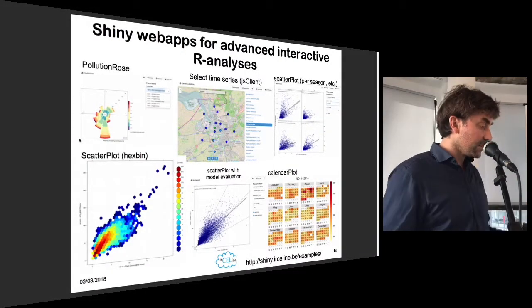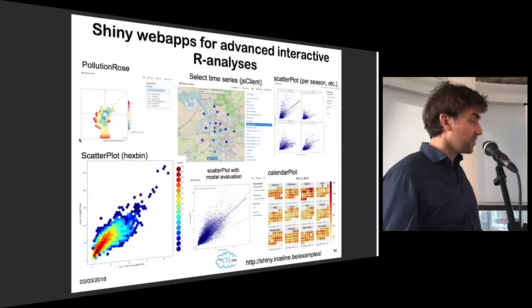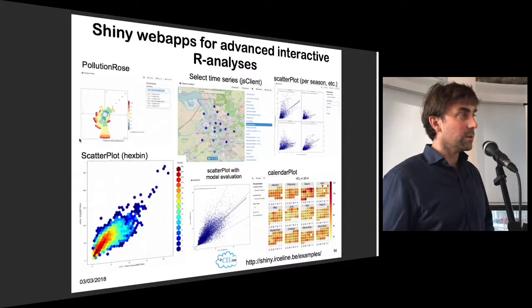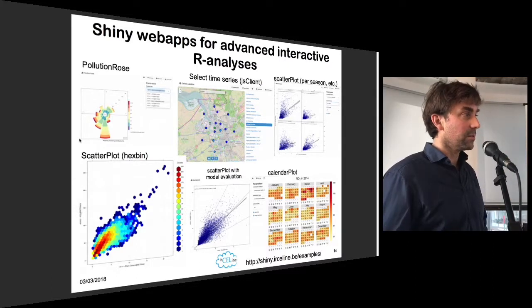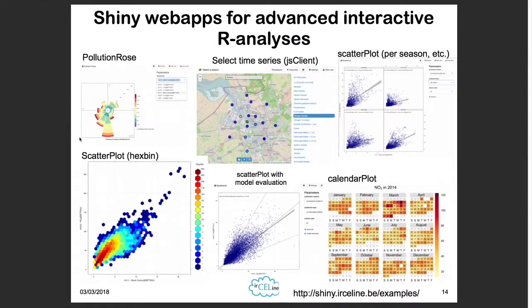Just some examples of Shiny apps: pollution roses, for example. Depending on the wind direction, the impact of concentrations at a given place will be different. That can be calculated as long as you have wind direction and wind speed. There are so many possibilities within R as soon as you get your data into it.